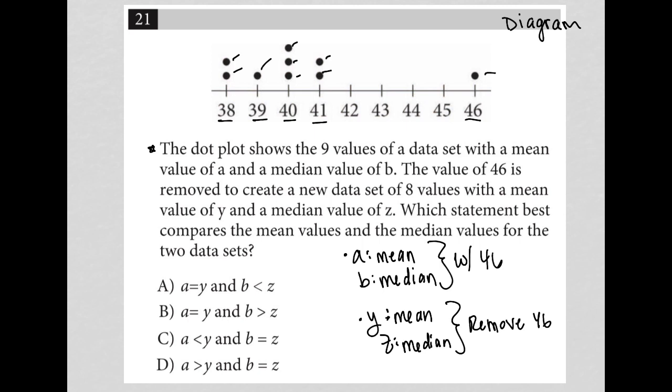When I'm solving for Y, I'm adding up all these same data points but removing 46. I'm removing this larger number and then dividing by eight. My expectation would be that the value I find for the mean from A is greater than the value for the mean from Y.